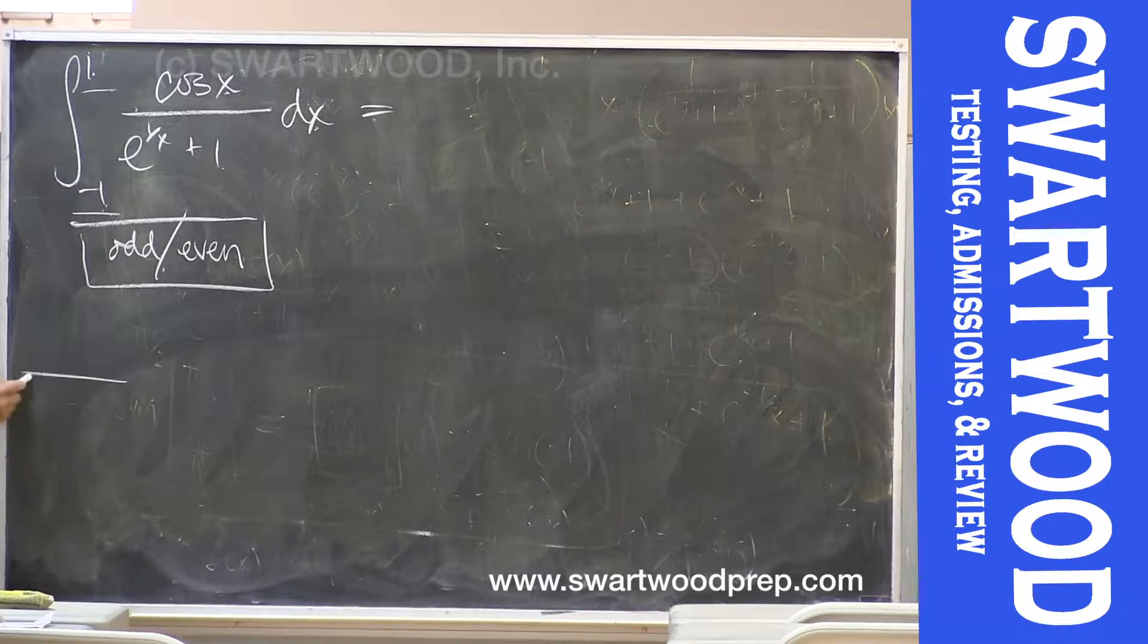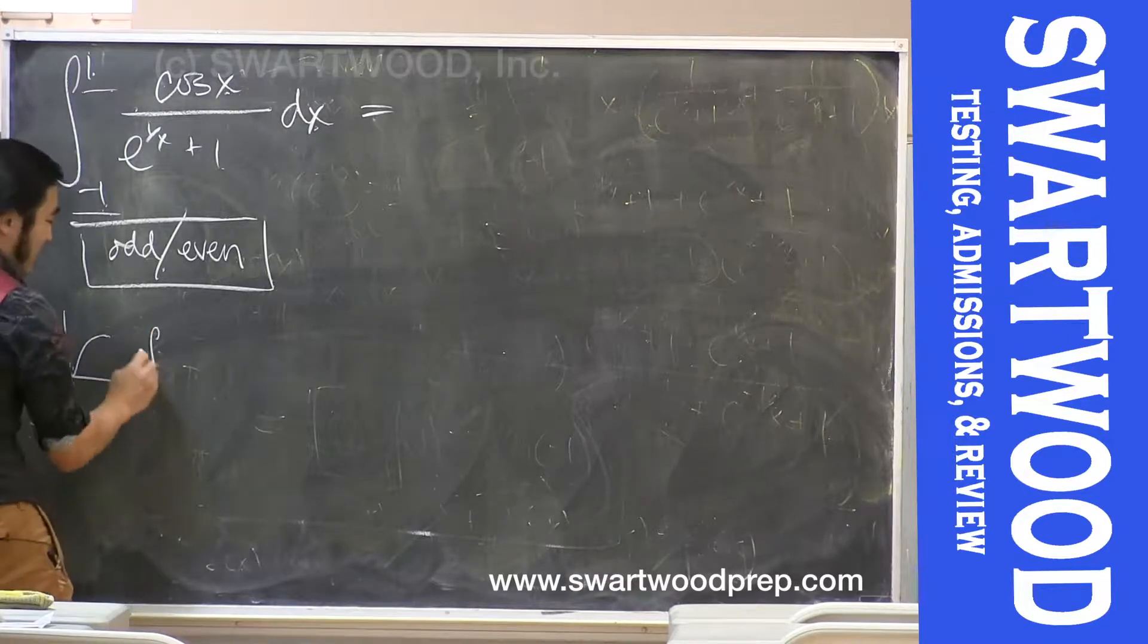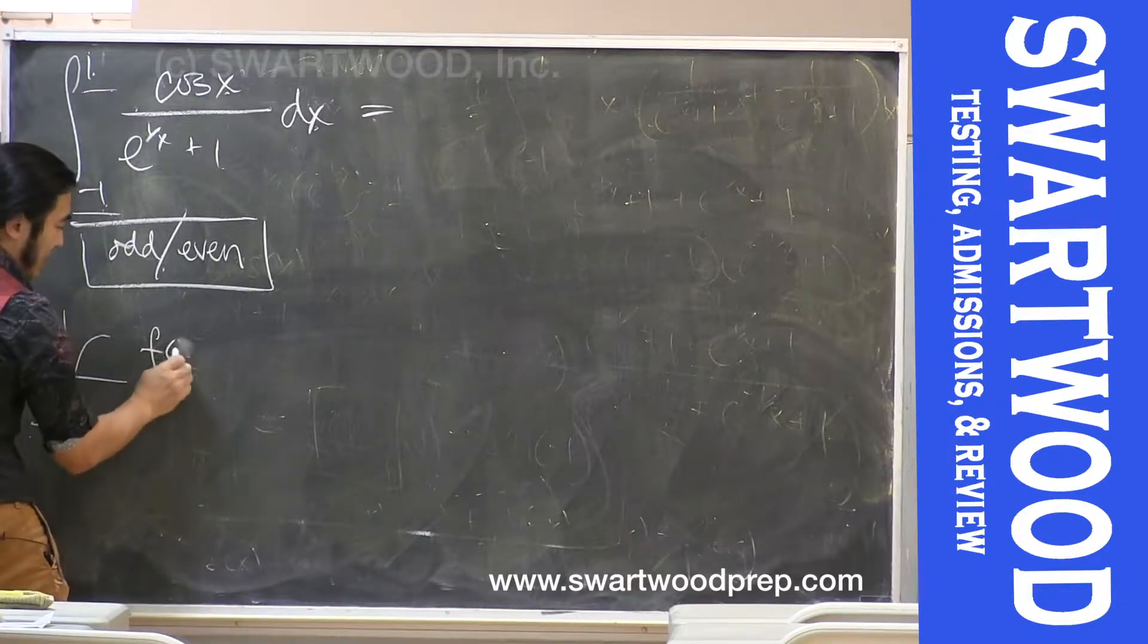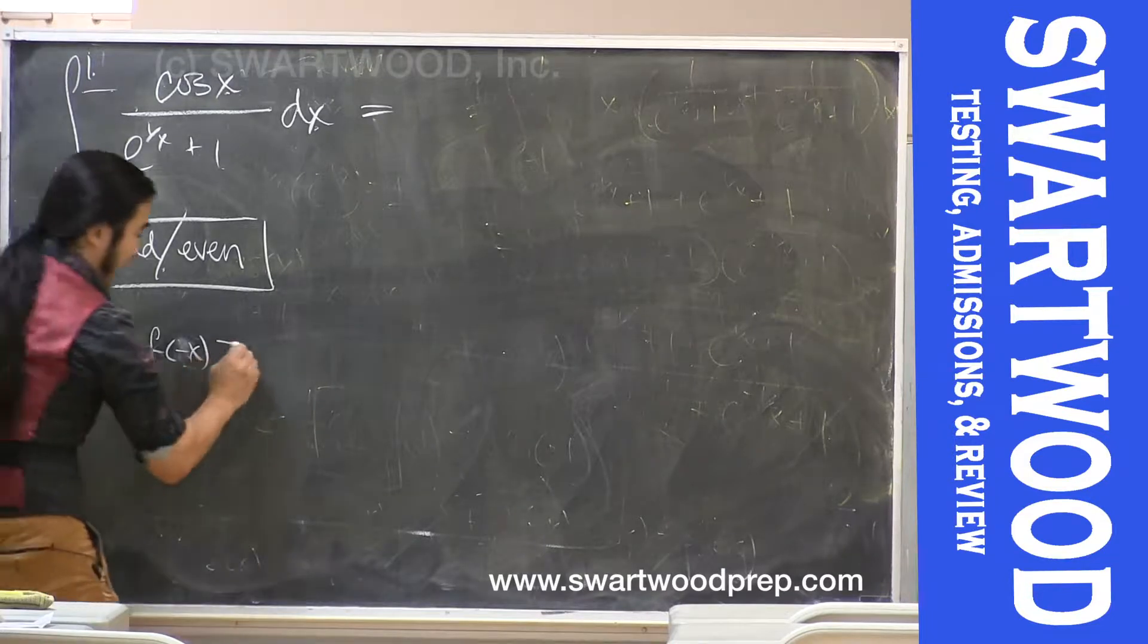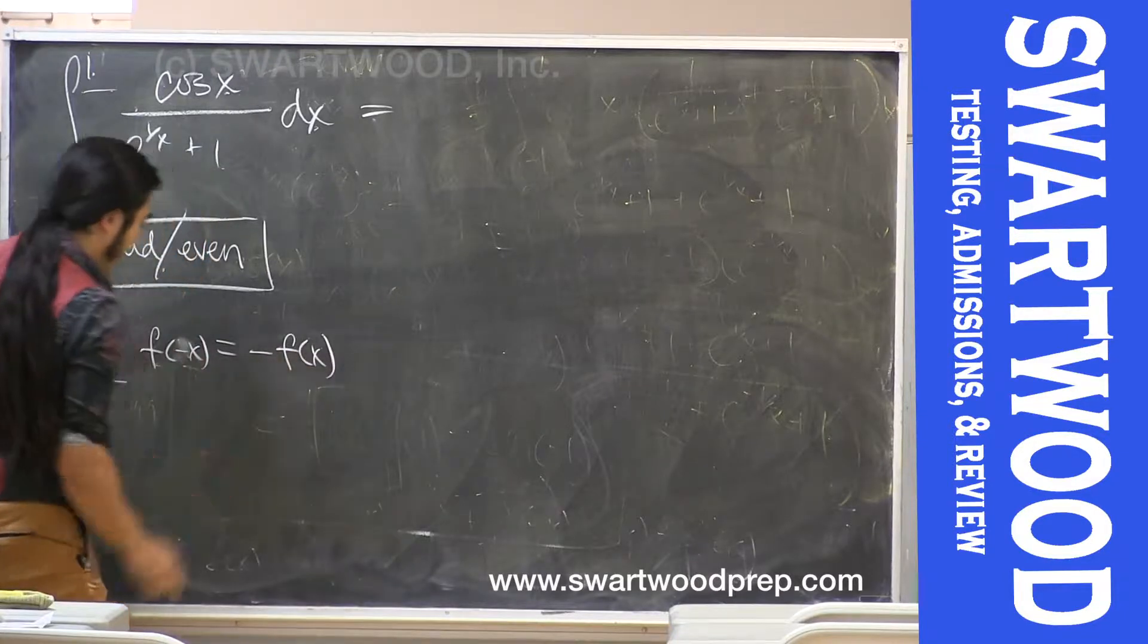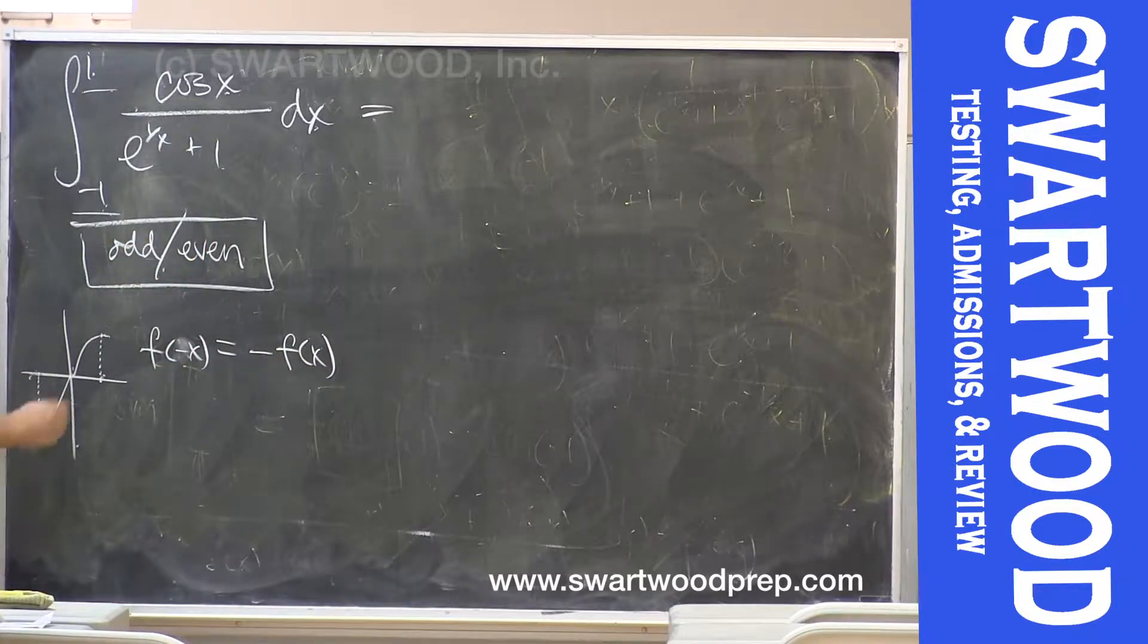So remember for an odd function, that just means that if you were to go out some amount to the right, if you go out to the left the same amount, you're going to get the same answer, but one will be the negative of the other. Okay, so basically if you wrote down symbols, if you took f of, let's say, negative x, which would be going over to the left, the value you would get here would be magnitude-wise the same value that you get over here, save for the fact that this would be the opposite sign. So that would mean it's negative of f of x, okay? All right, so that's odd.